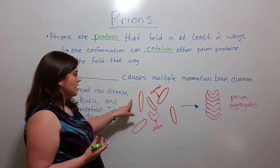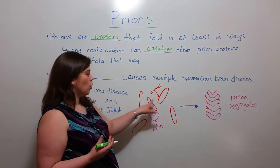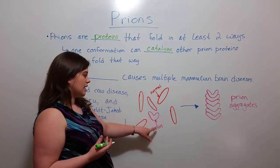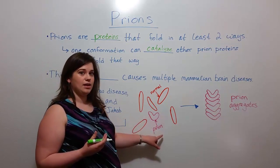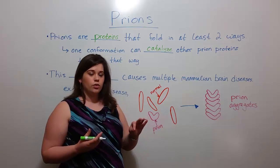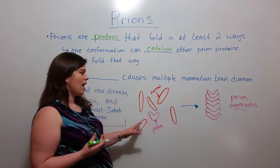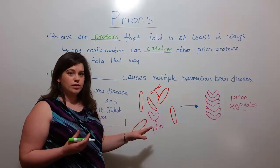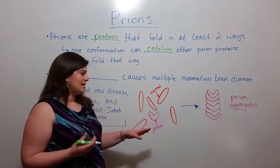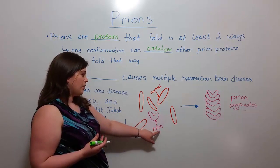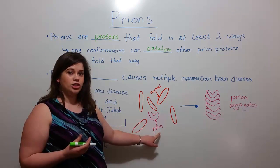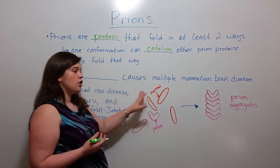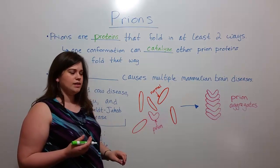Here we have some drawings. I have the normal proteins in orange, and a prion protein in pink. It's important to remember that the amino acid sequences of all of these proteins are the same. It's simply that the prion protein has a different shape — a different conformation — than the normally folded proteins.